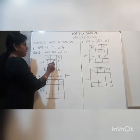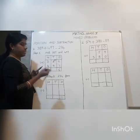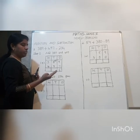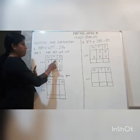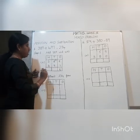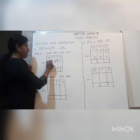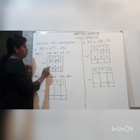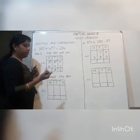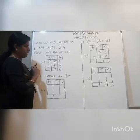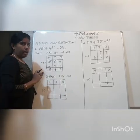Next, 9 plus 8 plus 1 carry over. 9 plus 8 is 17, plus 1 carry over is 18. So we write 8 and carry over 1. Then 4 plus 3 plus 1 carry over: 4 plus 3 is 7, plus 1 is 8. So 886 is our answer for the addition.